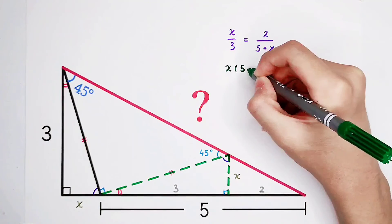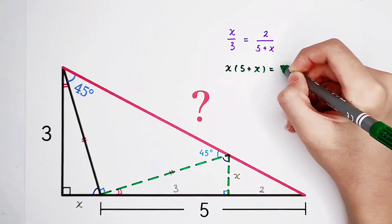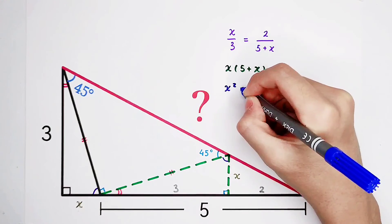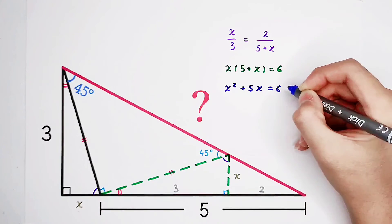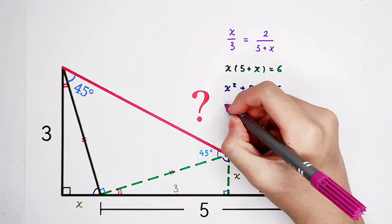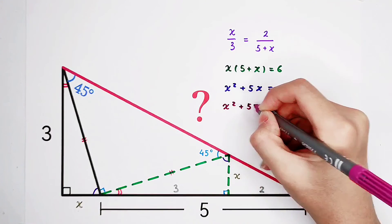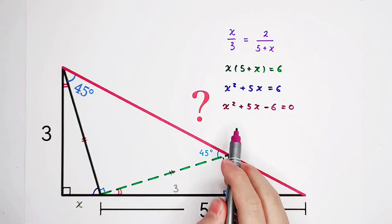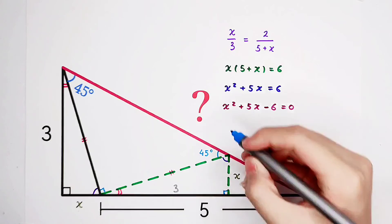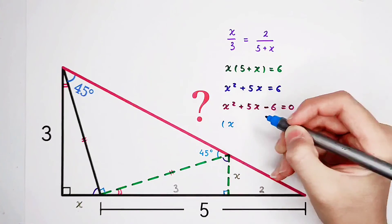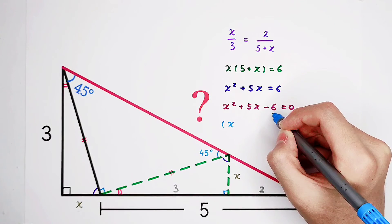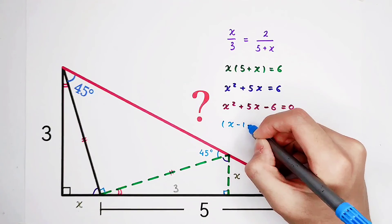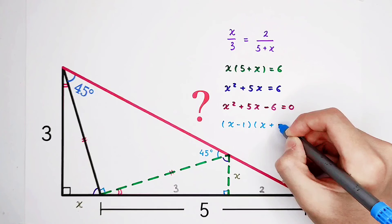x times 5 plus x is 6. The next step, x squared plus 5x is 6. And the next step, x squared plus 5x minus 6 is 0. So now you can see here is minus 6, here is plus 5. Factorization. It is, of course, x minus 6 can be written as negative 1 times 6. And negative 1 plus 6 is positive 5. So it is x minus 1 times x plus 6.